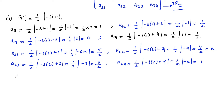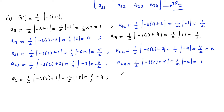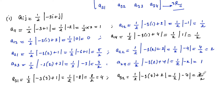Now the third row: A31 = (1/2)|−3×3 + 1| = (1/2)|−9 + 1| = (1/2)|−8| = 8/2 = 4. And A32 = (1/2)|−3×3 + 2| = (1/2)|−9 + 2| = (1/2)|−7| = 7/2.